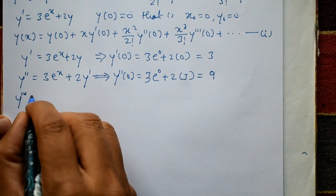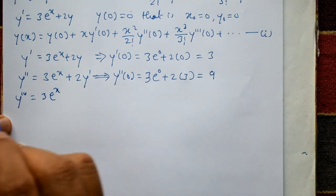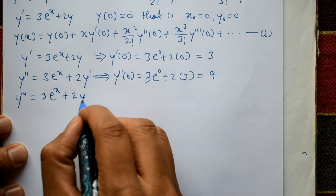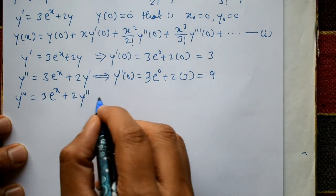Once again differentiate. 3 constant e^x differentiate gives e^x only plus 2. Differential of y' gives y''.